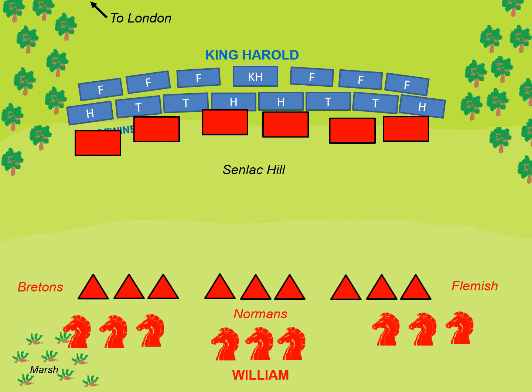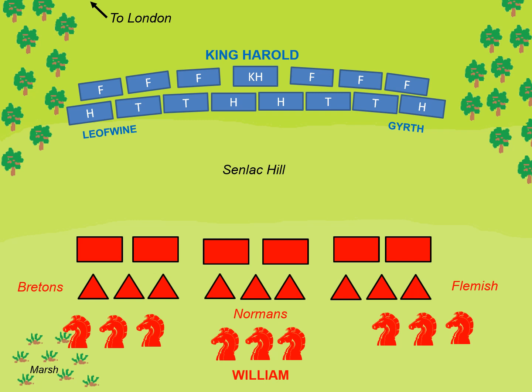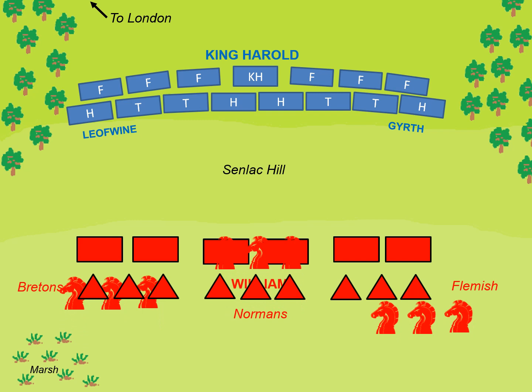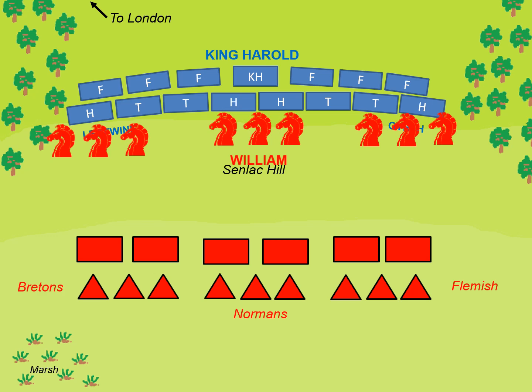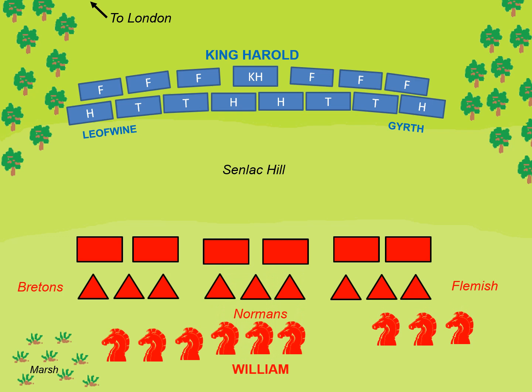William might now be seen as getting desperate, so he decided to send in his most powerful soldiers in an attempt to break through. The cavalry smashed into the shield wall too, but like the infantry before them they failed to break through, with losses on both sides. William had so far failed to break through, but his troops had maintained their discipline, so he could attack again.